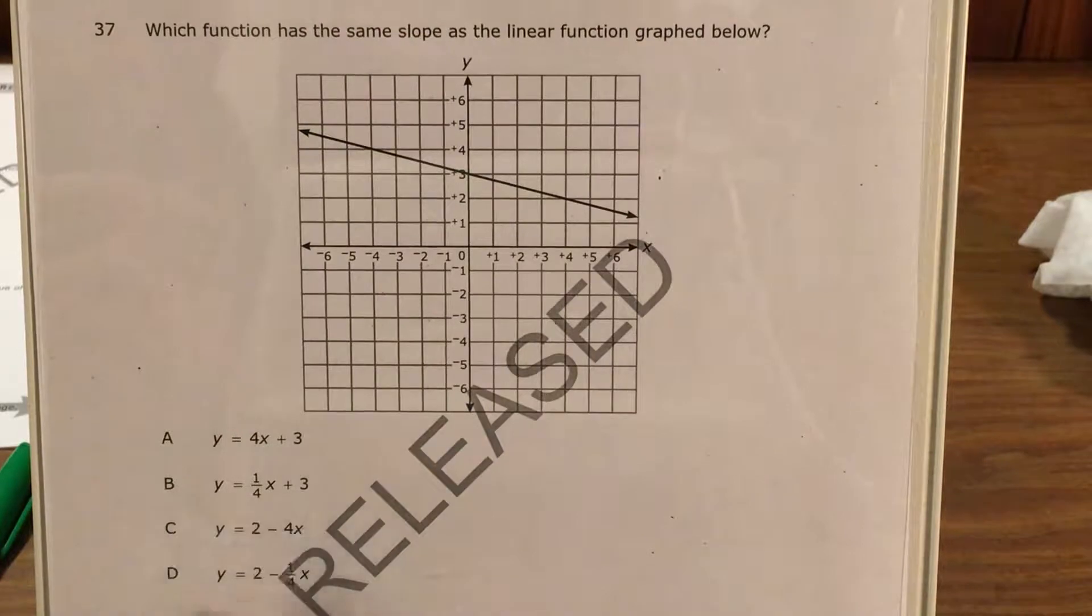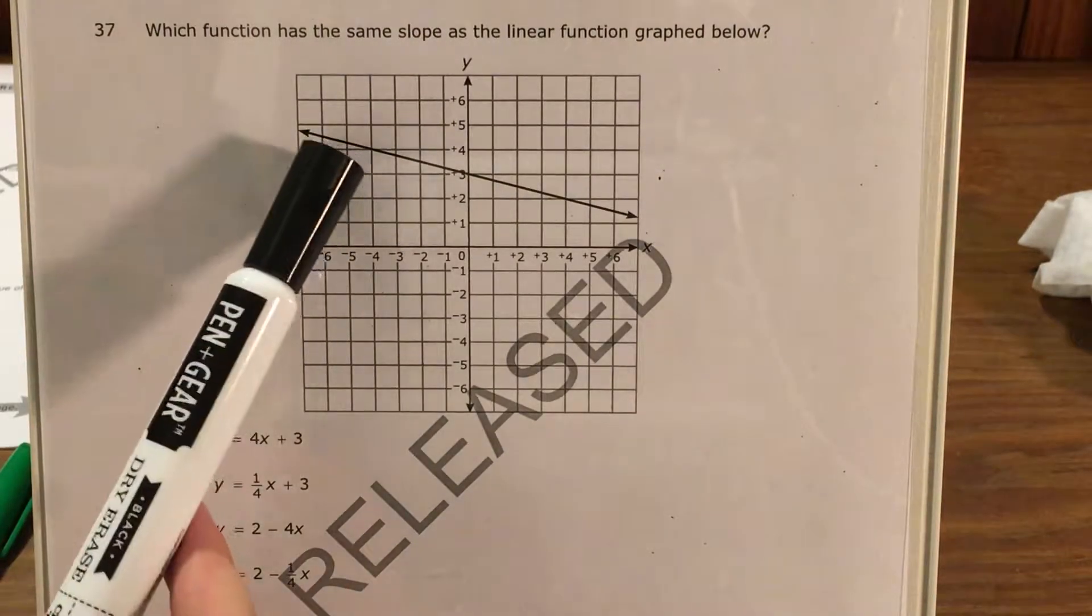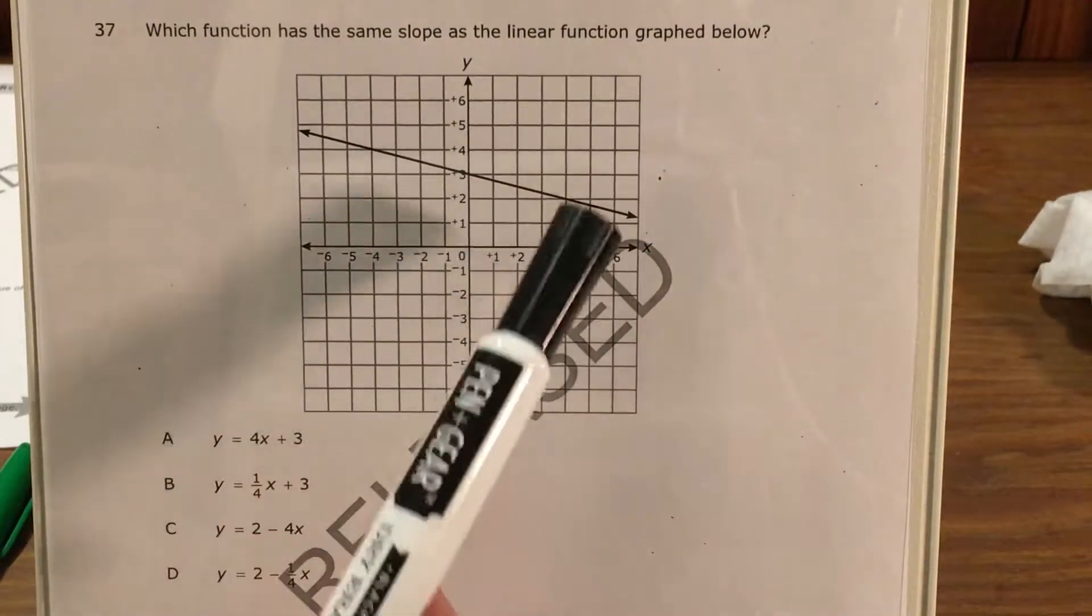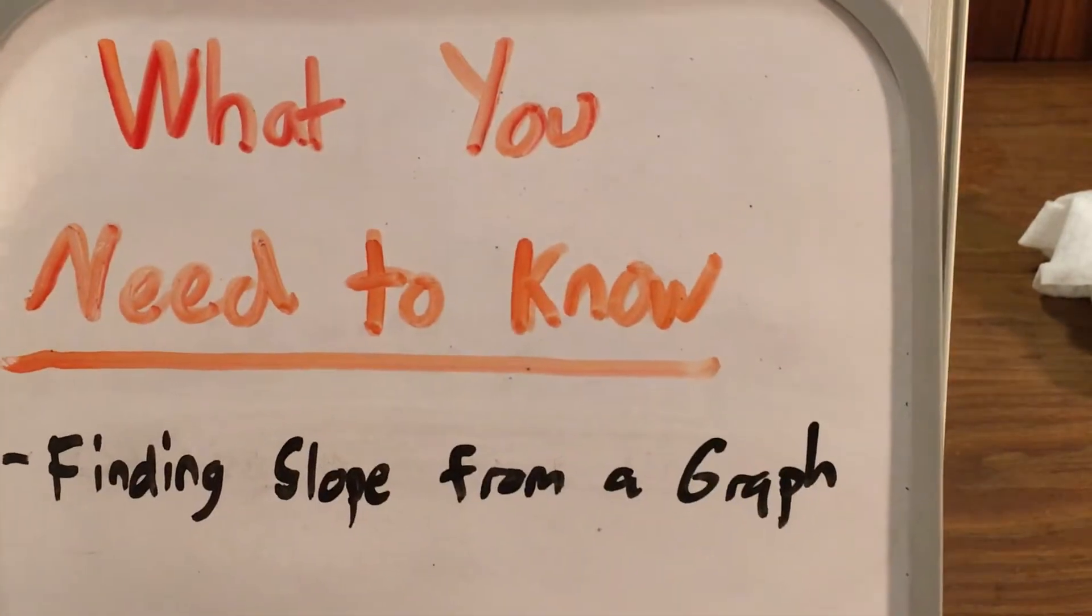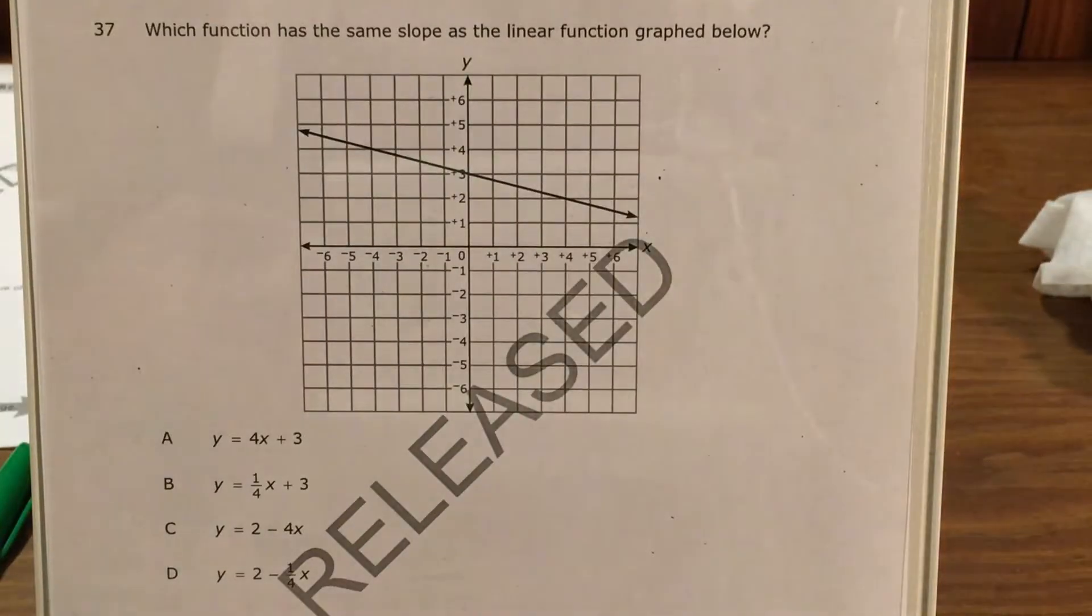We can see that we're just trying to see which function of our answer choices has the same slope as the linear function graphed below. Now to do a question like this we'll need to know how to look at a graph and find the slope of the line that is drawn on it.